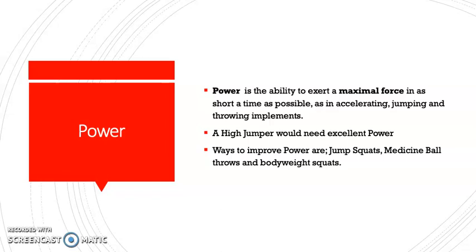It means you'll be able to jump higher. Accelerating — it means you'll be able to get quickly off the starting blocks. A high jumper, for example, would need excellent power. The more power they've got in their legs, the higher they can jump, and the more speed they'll be able to build up when getting to that jump. Ways to improve power: jump squats — you do a normal squat and jump up; medicine ball throws, which increases power in your arms; and finally, bodyweight squats, something you can do at home.